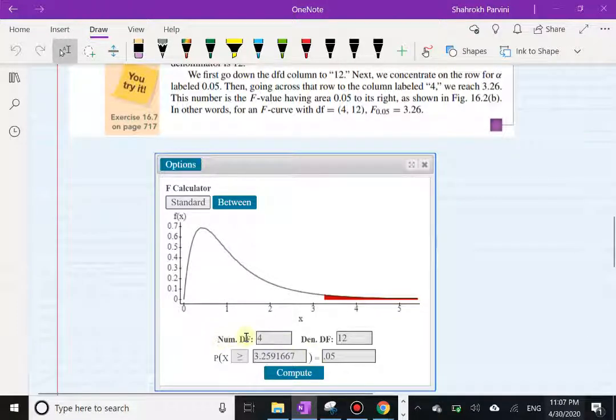Notice the numerator degrees of freedom is 4, denominator is 12. And of course the F value here is going to be 3.26 rounded.